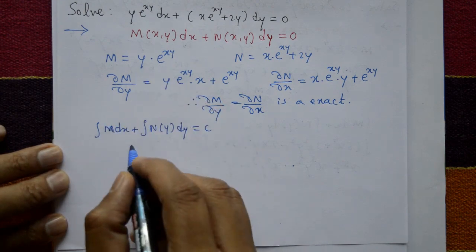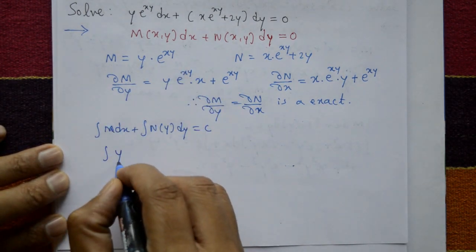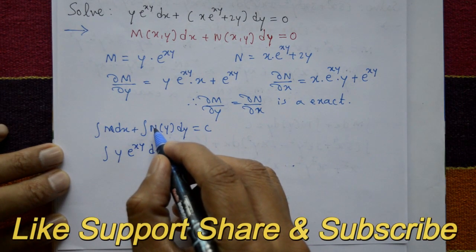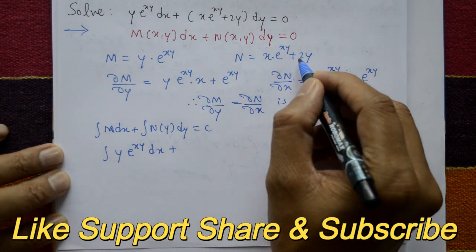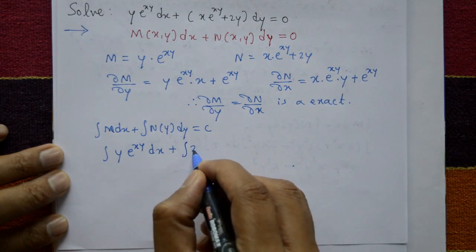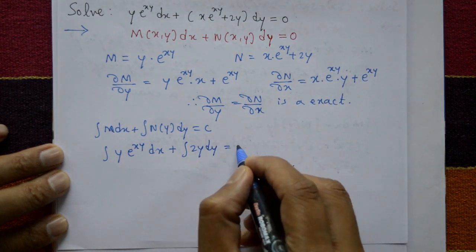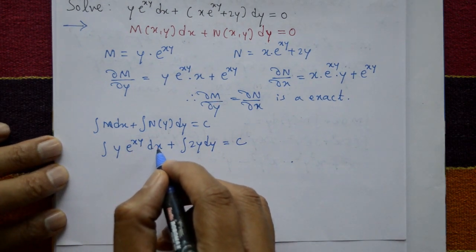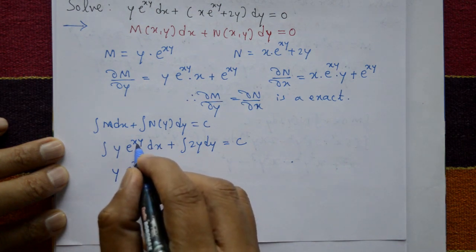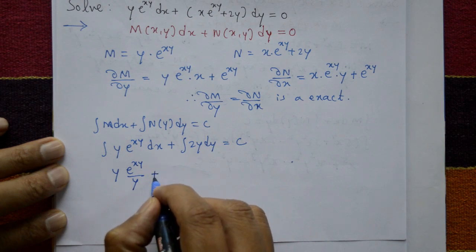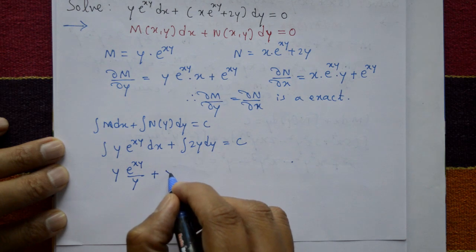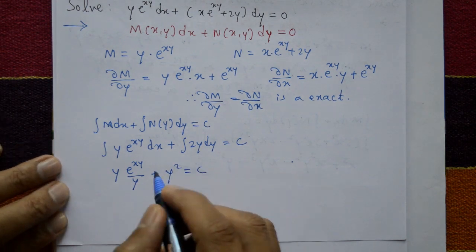Integration of M: integrate y·e^(xy) with respect to x. Since y is constant, this gives e^(xy) divided by y. From N, we take only terms not containing x — that is 2y — and integrate with respect to y, giving 2y·(y²/2) = y². The y in the denominator cancels with the y coefficient, so we get e^(xy) + y².